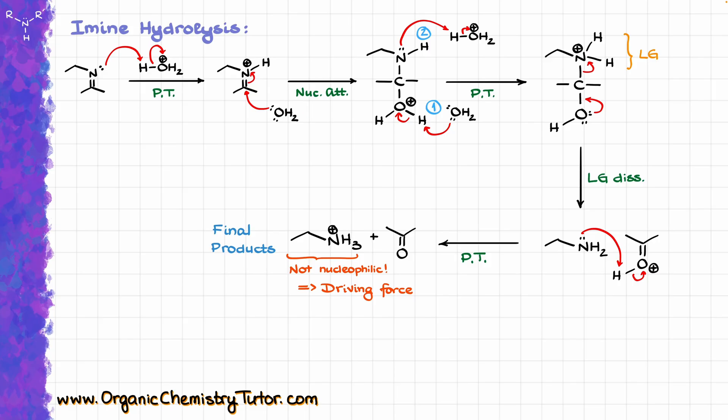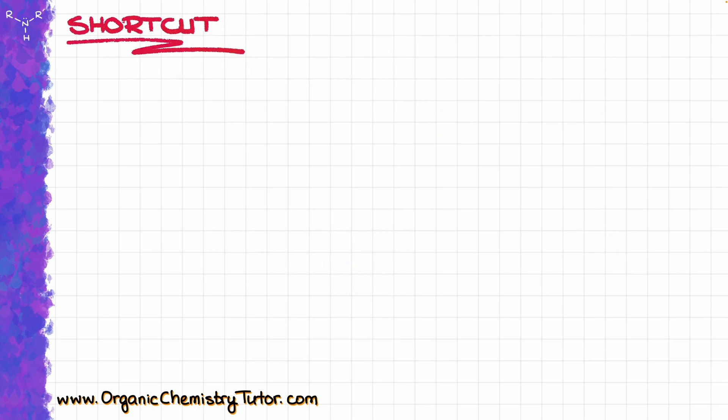If you pull out your notes from the imine formation, you will see that we go through all the same steps and all the same intermediates, but literally in the opposite direction. So if you know one mechanism, it is really easy to figure out the opposite mechanism if you need to. And while working through the mechanism is kind of cool, there is a simple shortcut that will allow you to predict the products of your reactions quickly and reliably.